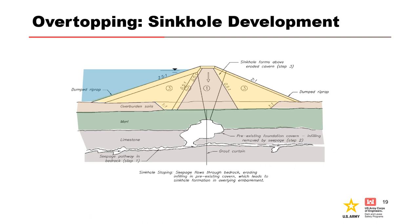Overtopping can also occur due to sinkhole development. Internal migration of embankment and/or foundation materials into open defects leads to stopping and development of a sinkhole or depression in the crest that drops below the water level. Open defects can also occur with embedded structures such as conduits, pipes, or culverts. Where the sinkhole develops is critical along with the water level at the time of occurrence. A sinkhole at the crest can be large enough to lower the crest, leading to overtopping. If the sinkhole develops at the downstream toe, it must lead to progressive slope instability and eventually overtopping. The event tree may need to consider the sinkhole location, and for conduits or culverts, the location could be informed by video inspection results.